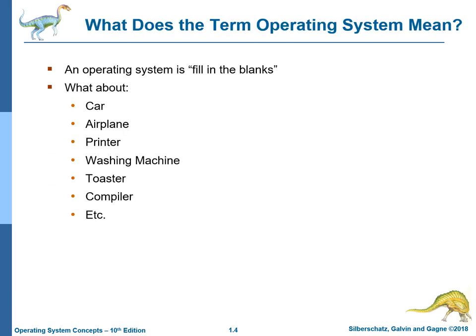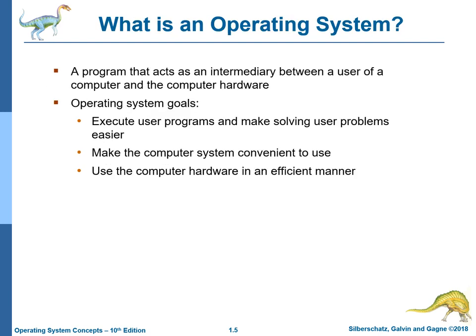So, what does the term operating system mean? Anybody wants to guess? What about car, airplane, printer, washing machine, toaster, compiler — are those operating systems? An operating system is a program that acts as an intermediary between a user of a computer and the computer hardware. Its goals are to execute user programs and make solving user problems easier, to make the user system convenient to use, and to use the computer hardware in an efficient manner.